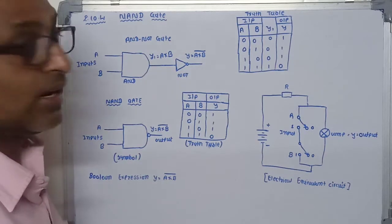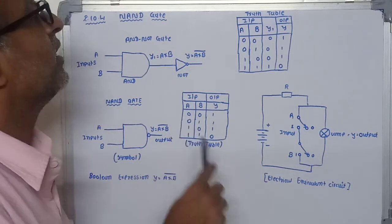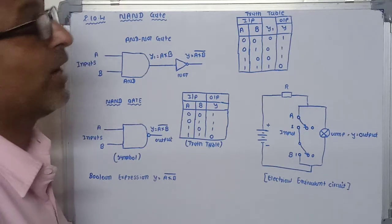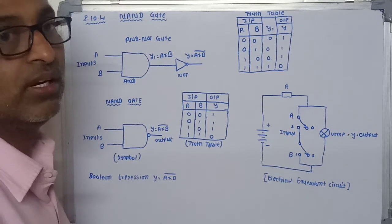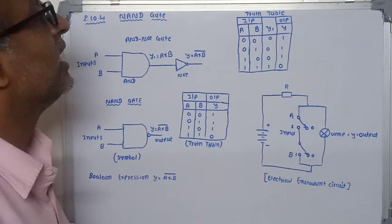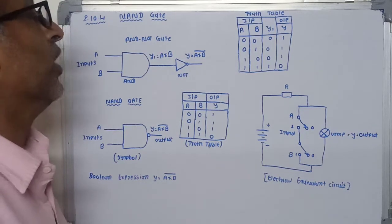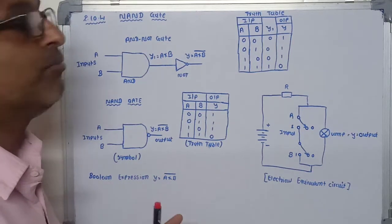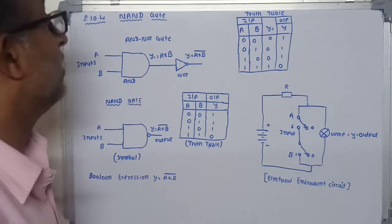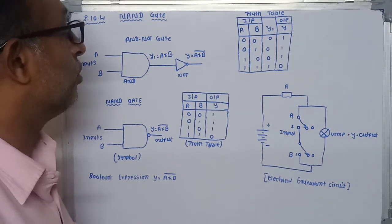The output of this NAND gate becomes zero when both inputs are one. To repeat: the output of this NAND gate is always high if both inputs are zero, or any one input is high. But when both inputs are at logic one, the output of this NAND gate is zero.